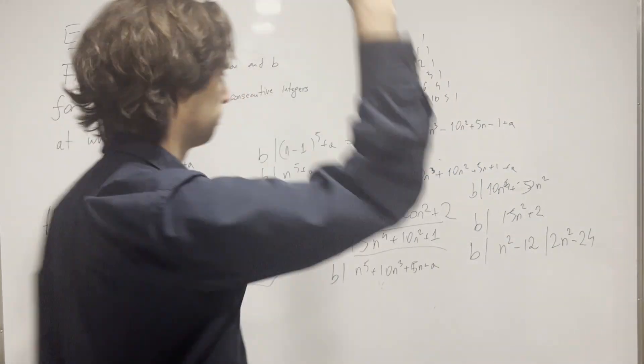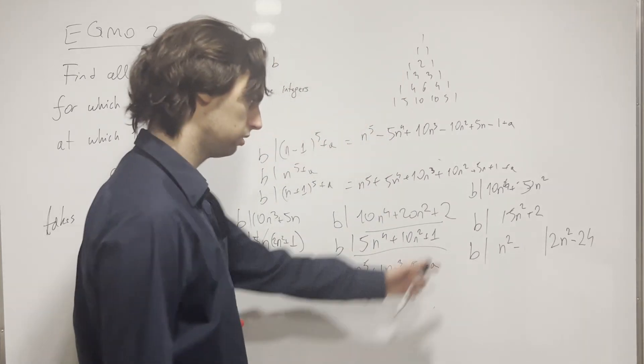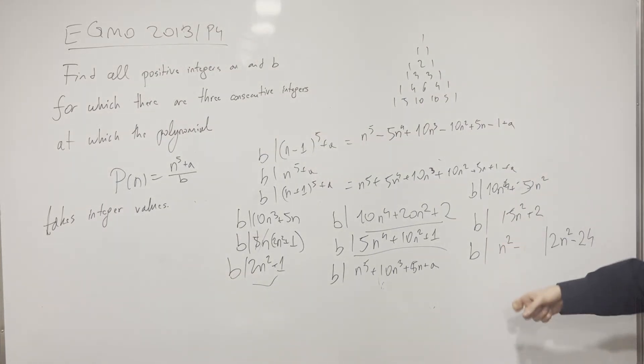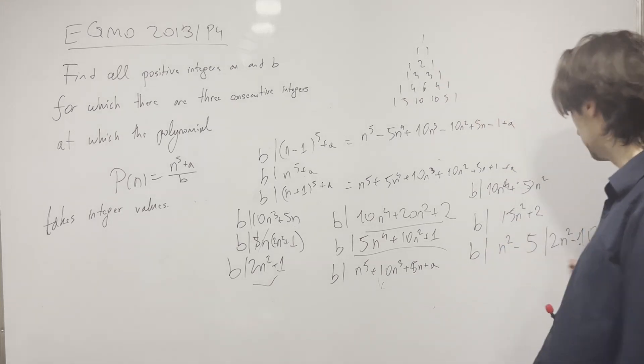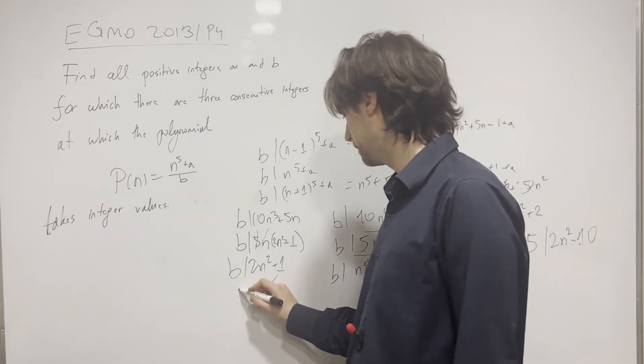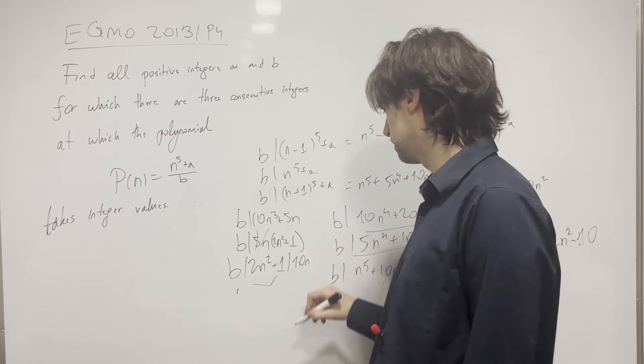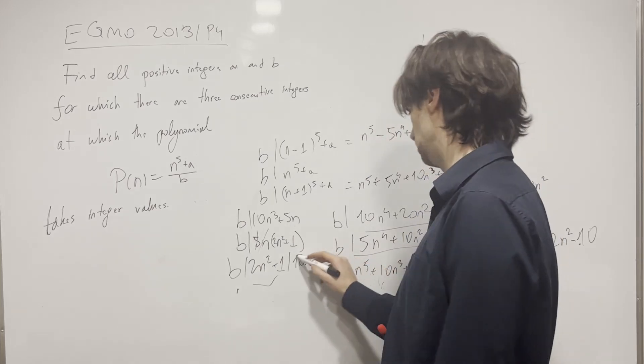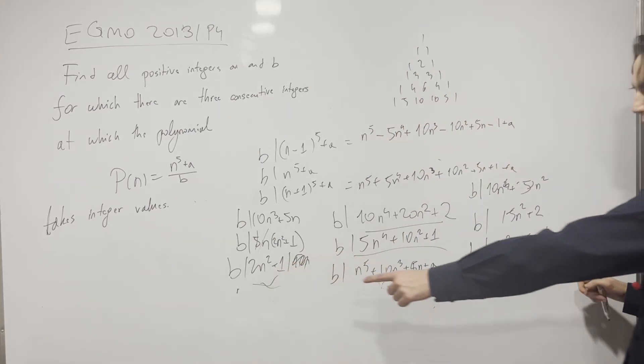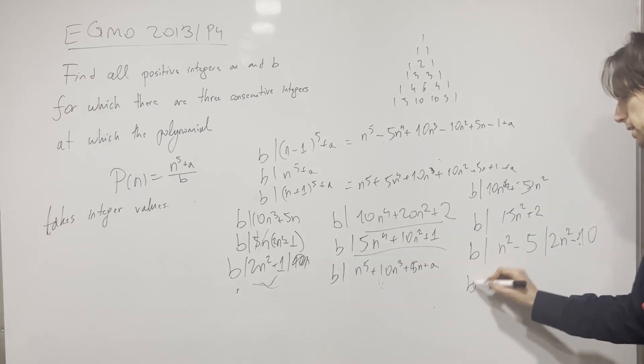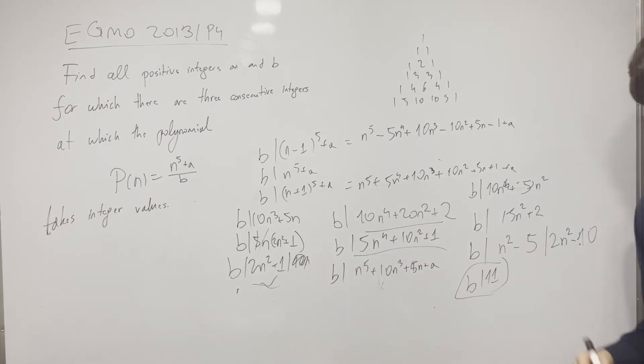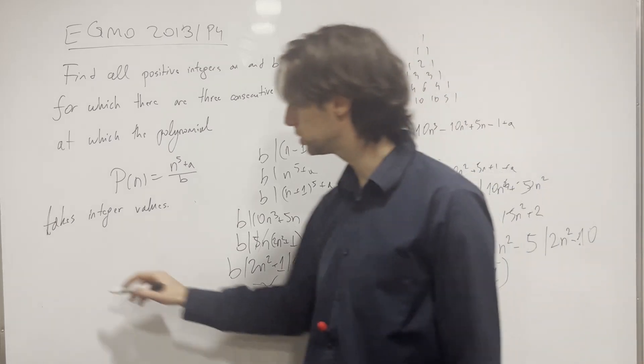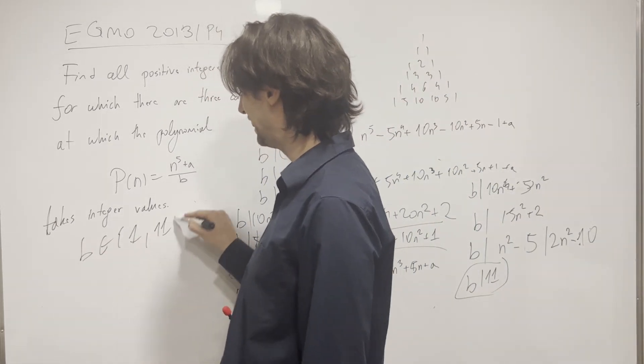I invite you here to pause for 5 to 10 minutes and try to push the problem further. We've done a bunch of work. Now you do some work. And the mistake was actually in here. It's minus 14, then here it's minus 7. So what we have is b divides n^2 - 5. And now this is 2n^2 - 10. And now we get that b also divides 2n^2 + 1. Subtract this from this, and you get that b divides 11.